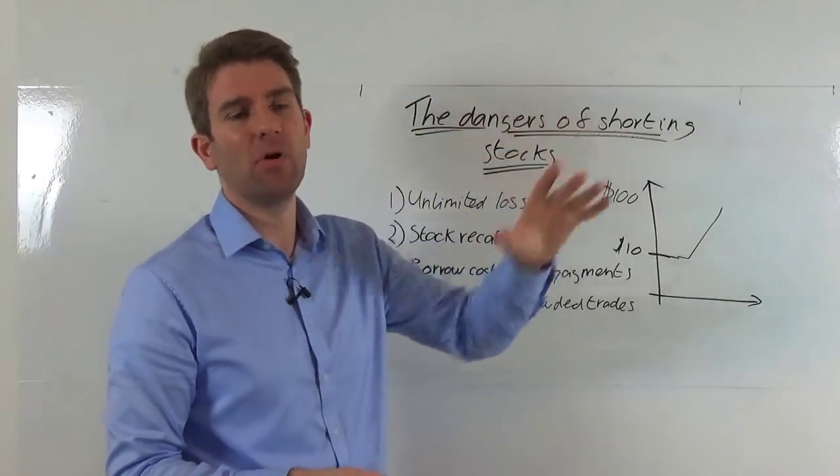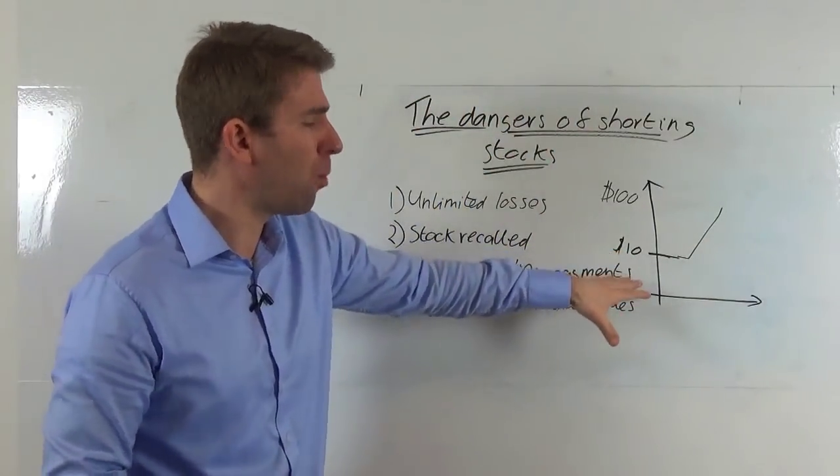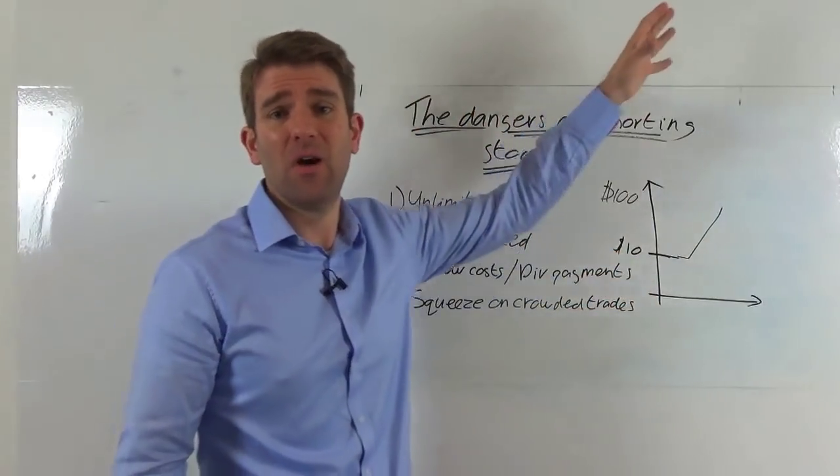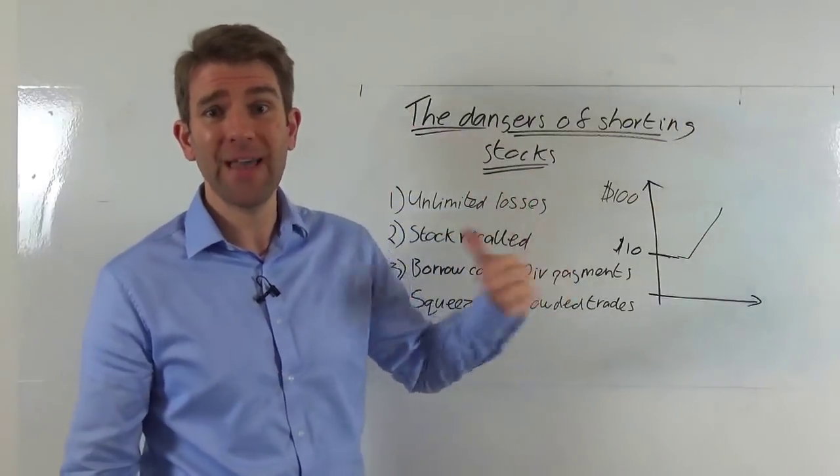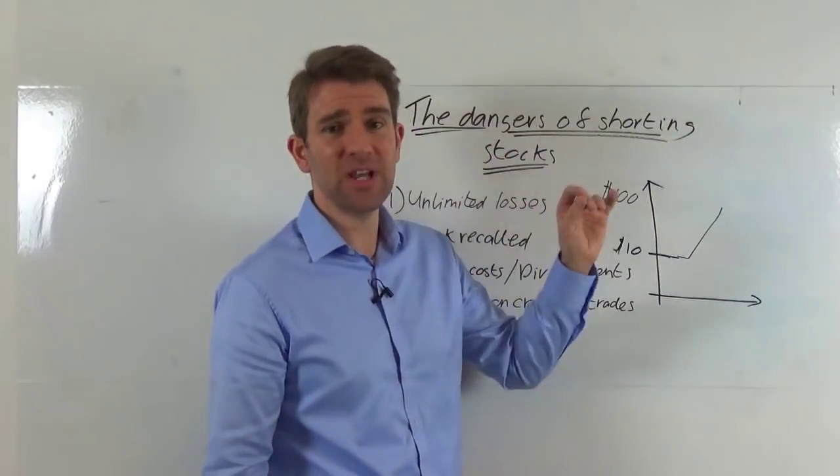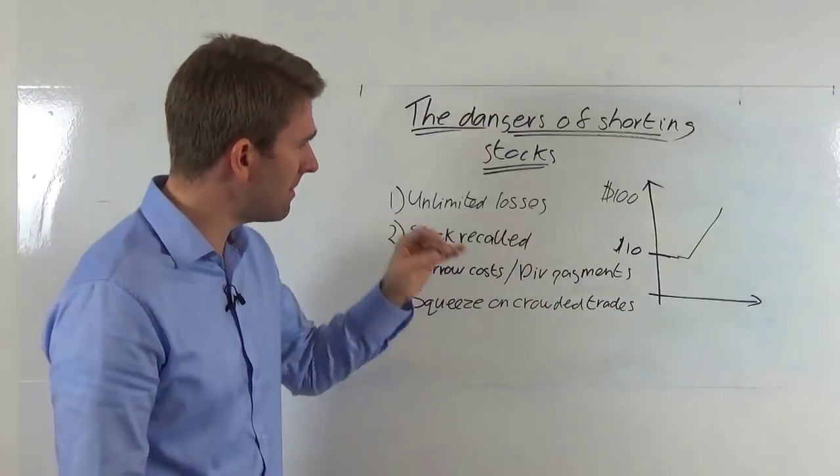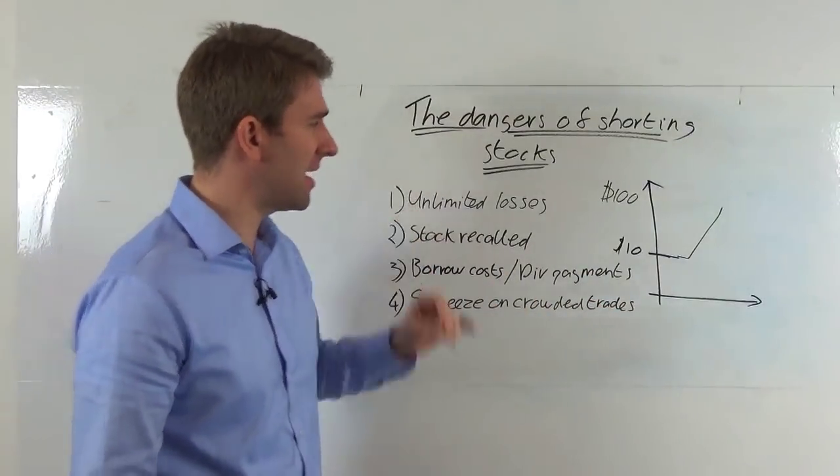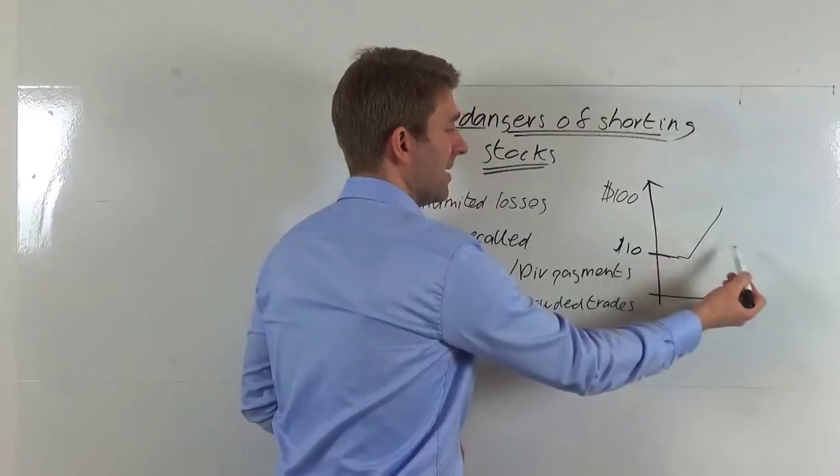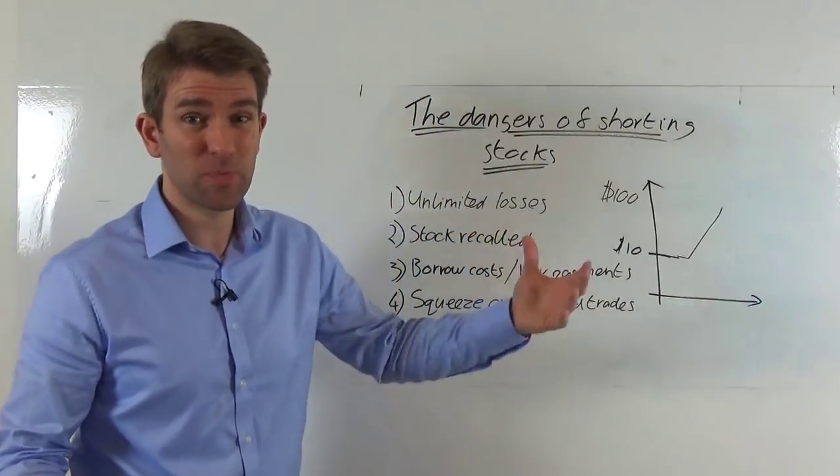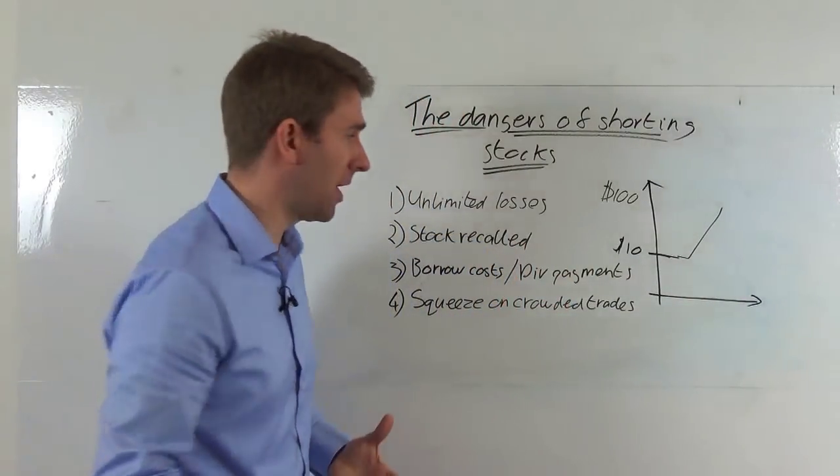We've seen in markets before we've seen small cap stocks, we've seen cryptos, all these things go many multiples up. They've gone from kind of one cent to a hundred dollars, and if you're short on that you are losing a huge amount of money. Your losses are potentially unlimited. Remember that when you're shorting stuff, you've got to be careful that you have a plan in place of exit.